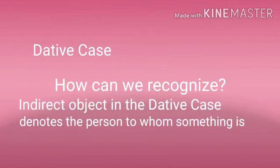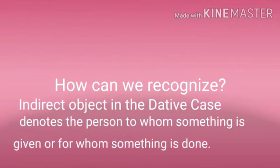In the dative case, the indirect object denotes the person to whom something is given or for whom something is done. For example: 'I gave a book to Harry.'